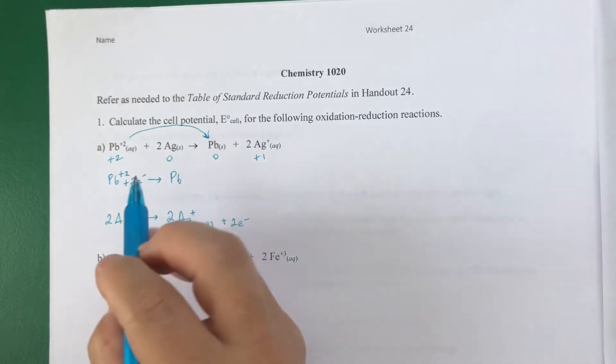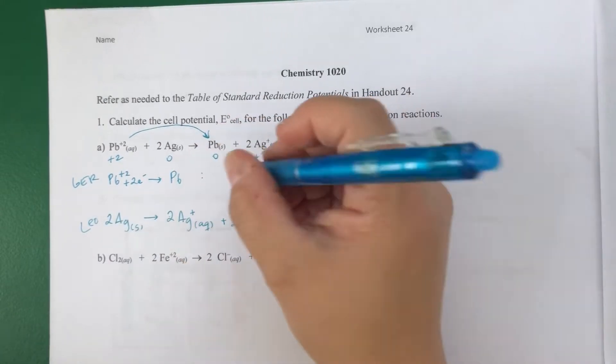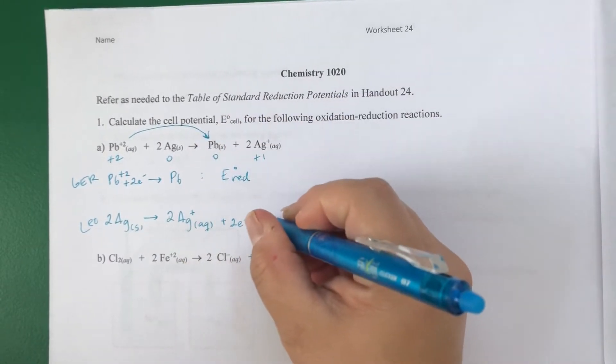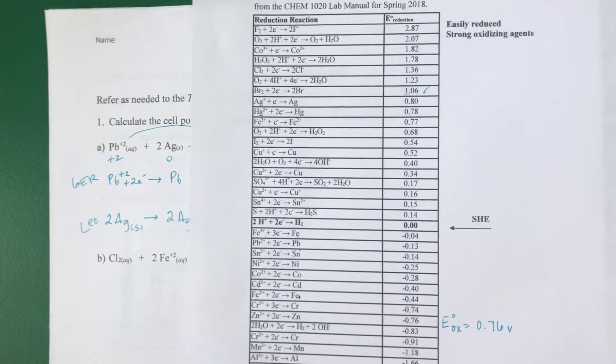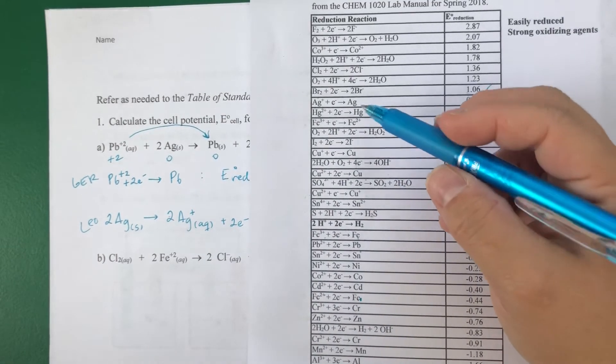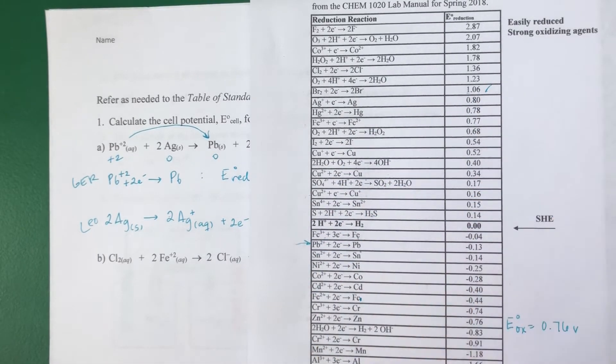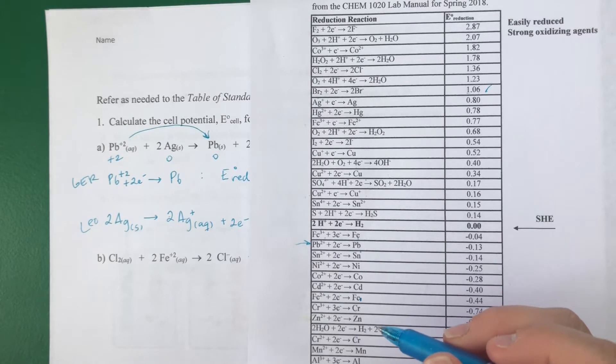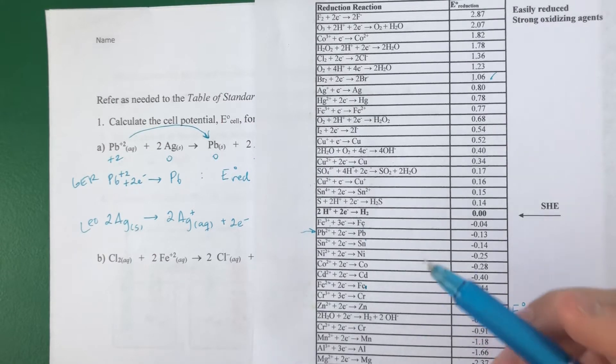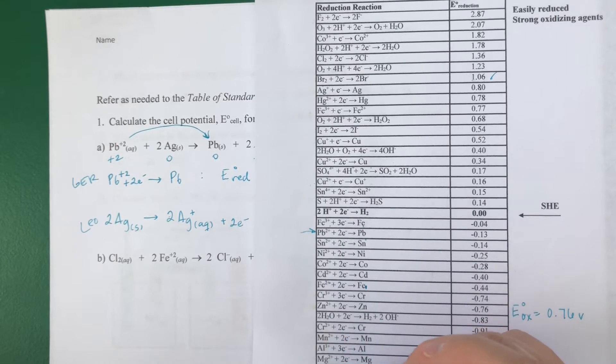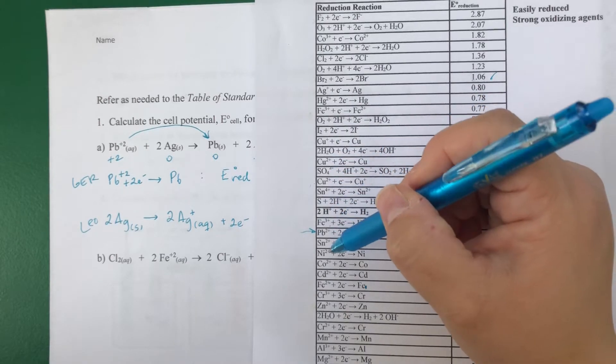To get the cell potential, this is being gain electron reduced, lose electrons oxidation. So this is my reduction. I need the E_red, and this is my oxidation. So I need my oxidation potential. And this is where I go to the table. And I look for lead and lead 2+ right here. Silver, and then I'm going to find silver.